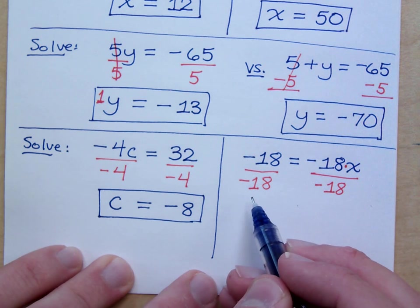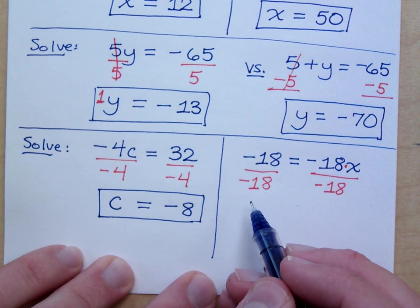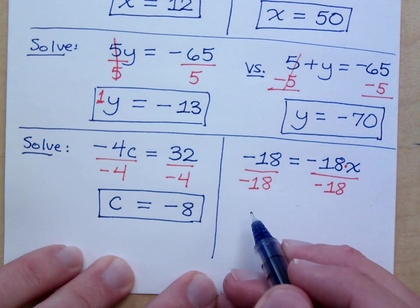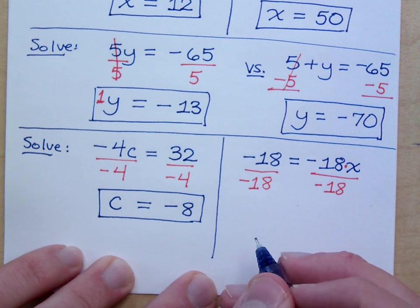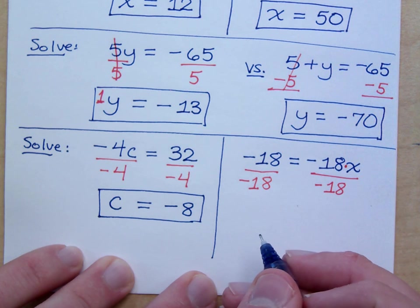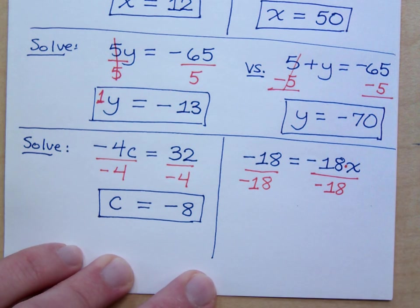So what's negative 18 divided by negative 18? Positive. Now what's the answer though? Is it 1 or is it 0? Remember, any number divided by itself is 1. Except for what number? 0.